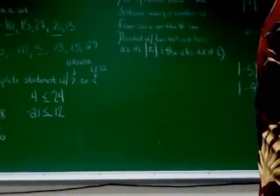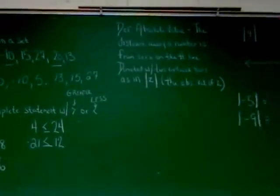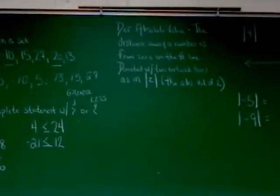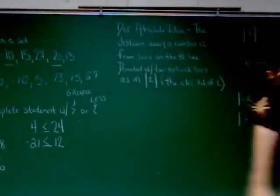And so, we move on to absolute value then. Absolute value, simple absolute value we're talking about here. Absolute value is the distance away a number is from zero on the number line. The distance away a number is from zero on the number line. It's denoted with two vertical bars, as in vertical bar z, vertical bar. They're not ones. They're not lowercase l's. These are vertical bars here.